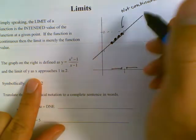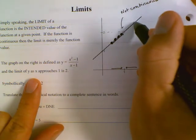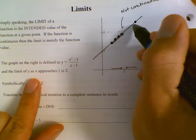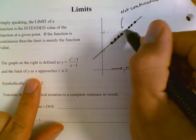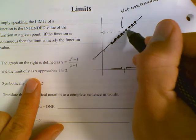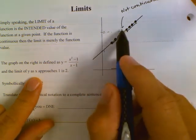And from the right side, as the x values go this direction, this point would be going towards this open hole that we have, and it tends toward the same exact number 2.